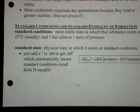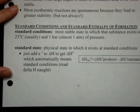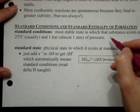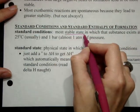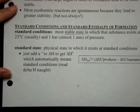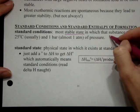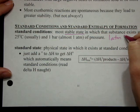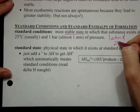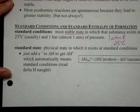All right, standard conditions and standard enthalpy of formation. Standard conditions is essentially the most stable state of a substance at sort of room conditions. So basically one atmosphere and 25 degrees Celsius or 298K.